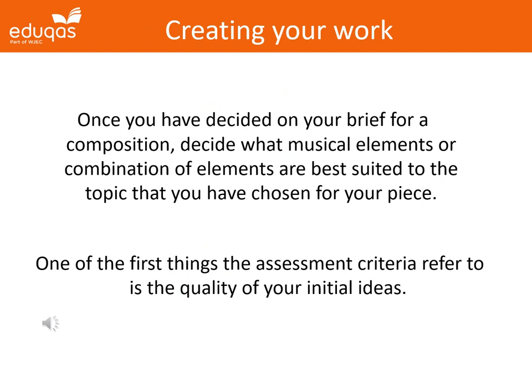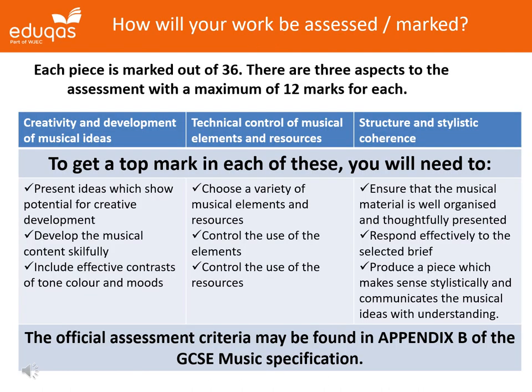Once you have decided on your brief for a composition, decide what musical elements or combination of elements are best suited to the topic you have chosen. One of the first things the assessment criteria refer to is the quality of your initial ideas. This slide shows what you need to present to get good marks. The official assessment criteria in the specification are in three columns with four marking bands for each. You can use these yourselves to consider how successfully you have achieved each of the criteria in your piece, and they may give you some idea of what else to do or how to improve. The assessment criteria are what the teacher will use to assess your work.